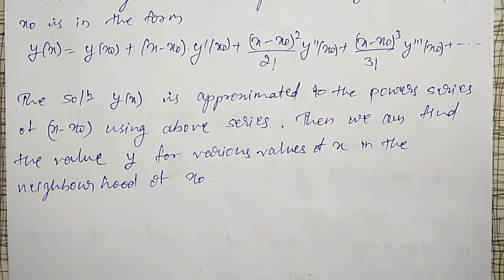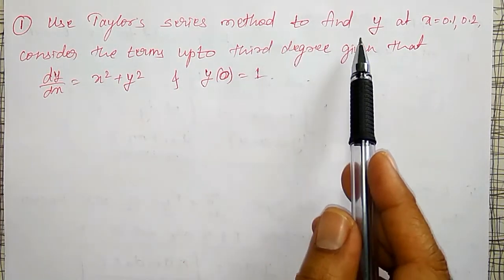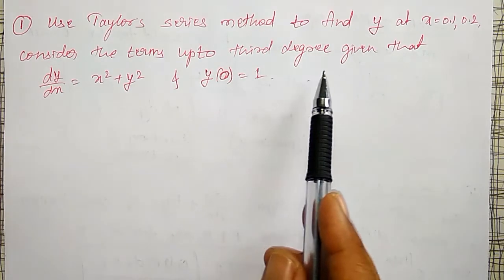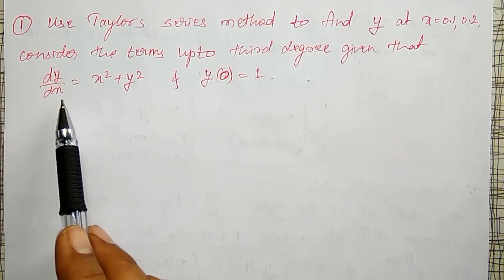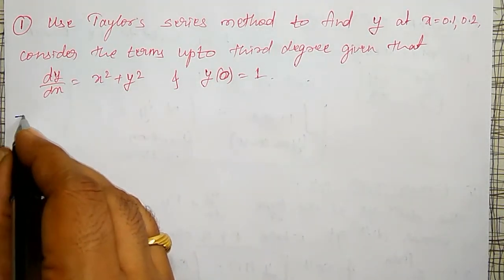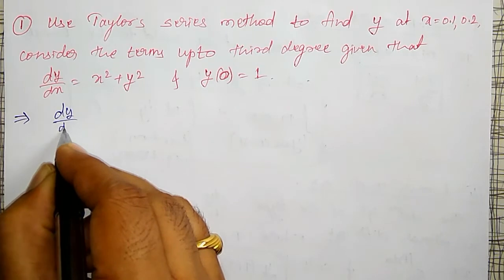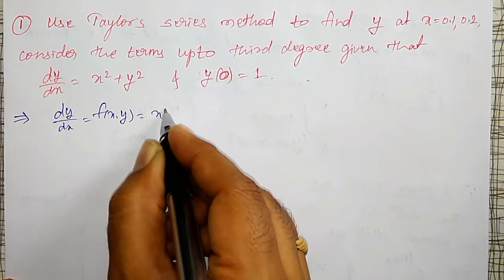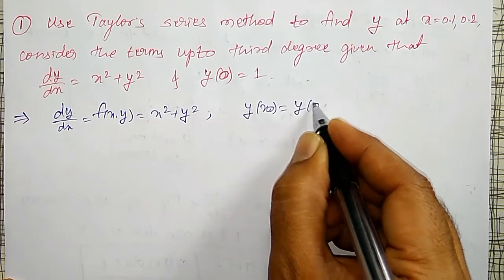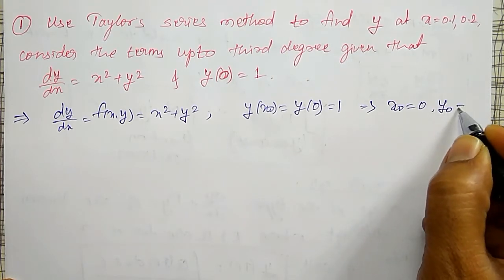Now, use the Taylor series method to find y at x equal to 0.1 and 0.2. Consider terms up to the third degree, given that dy by dx equal to x squared plus y squared and y of 0 equal to 1. Comparing with the initial value problem, f of xy equal to x squared plus y squared, and x0 equal to 0, y0 equal to 1.